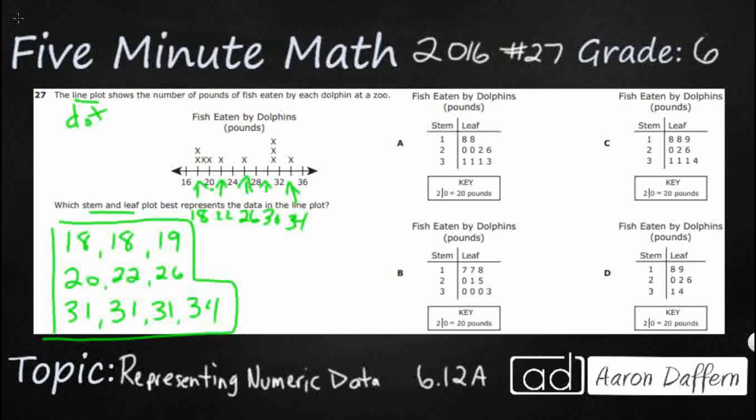So the key to any stem and leaf plot is to look at the key down at the bottom, and it's going to let you know what it represents. The stem is going to be the tens place. In this case, like 20, it's going to be two in the stem, zero in the leaf, which means a stem is the tens and the leaf is the ones place. So it just makes it a little bit more expedient if you have quite a few numbers within the same tens group.